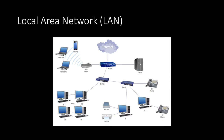A local area network, or LAN, is a grouping of computers that are interconnected within a single physical network. Typically, devices on a LAN can easily communicate with each other, but require special configuration in order to communicate with devices outside the local network. Networks are separated by routers. A single network may have multiple routers, each acting as a gateway between other networks.